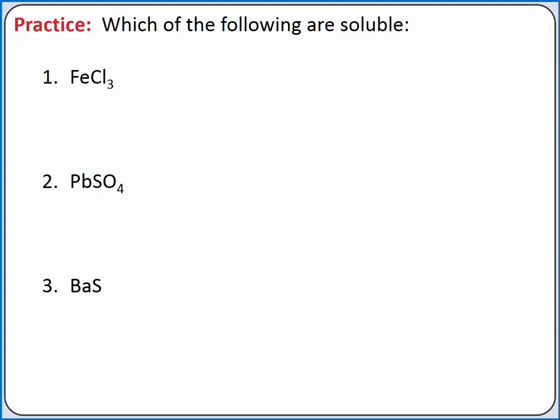Let's practice determining if ionic compounds are soluble or insoluble. For each of these examples, we'll first split the ionic compound into its component ions, then we'll apply our solubility rules.